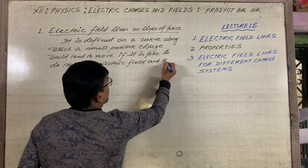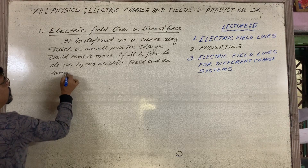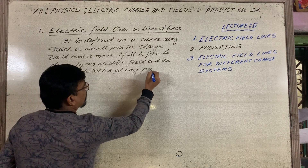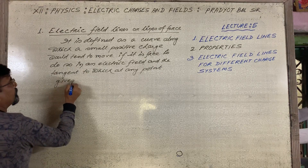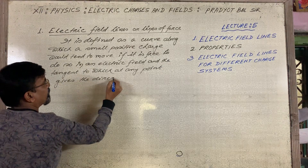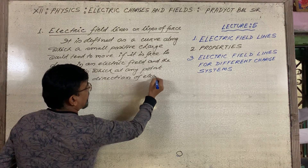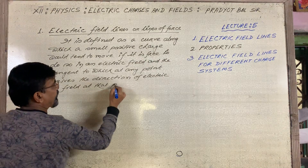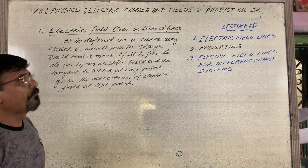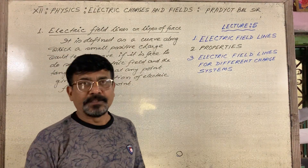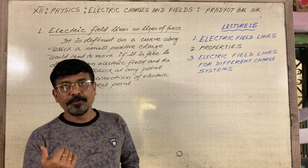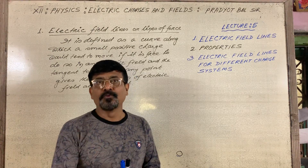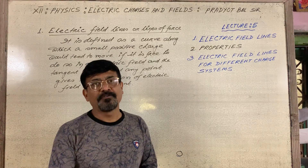And the tangent to the curve at any point gives the direction of the electric field at that point. So this is the definition of electric field lines, or lines of force. We will have a clearer picture if we go through some of its properties. There are a very large number of properties of electric field lines; let us have a quick look at the main five.